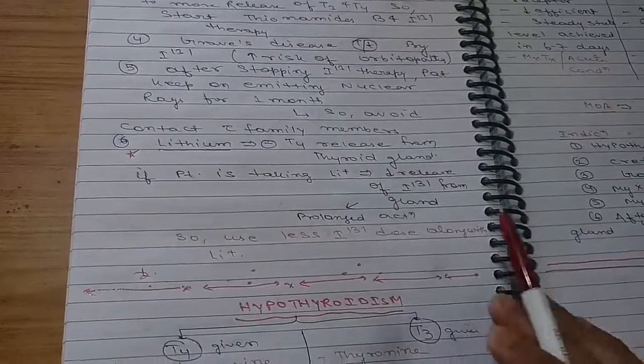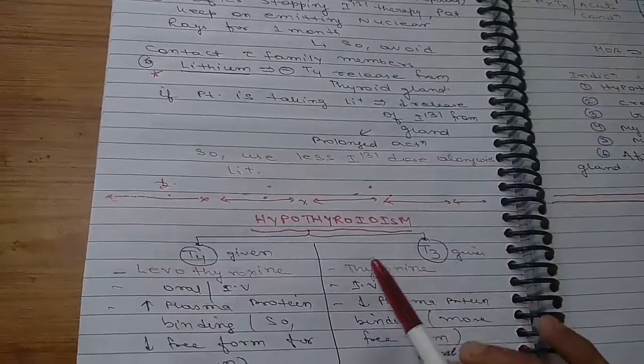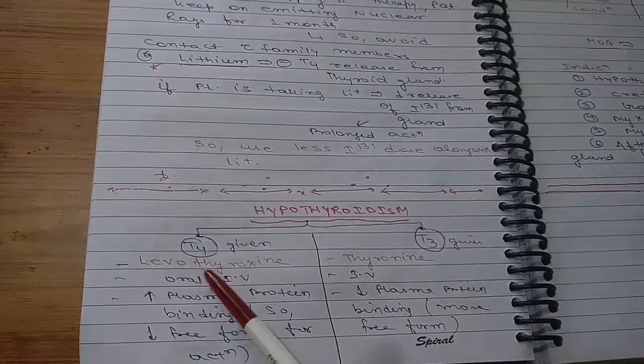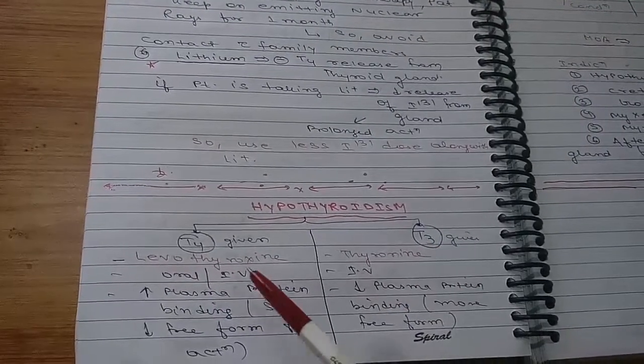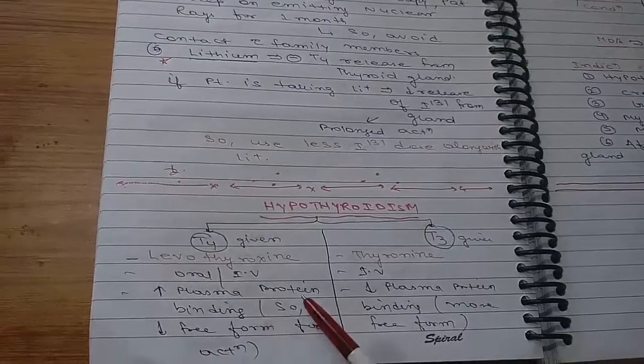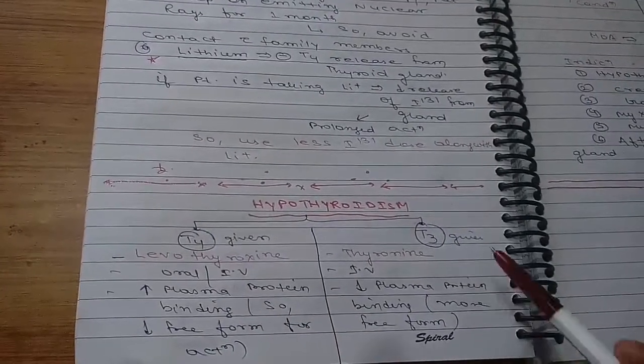Now coming to hypothyroidism. For hypothyroidism, you can give T4 or T3. This is levothyroxine, this is known as liothyronine. It is given orally or IV route.